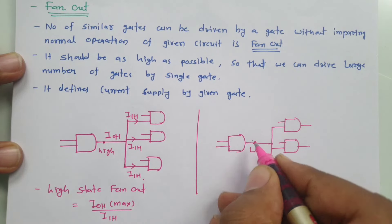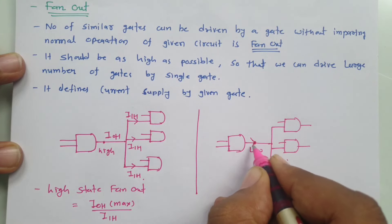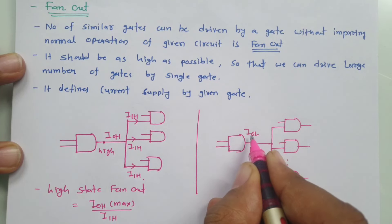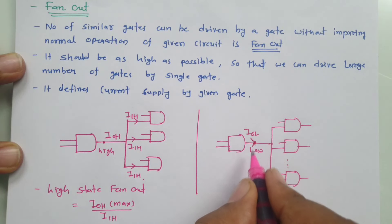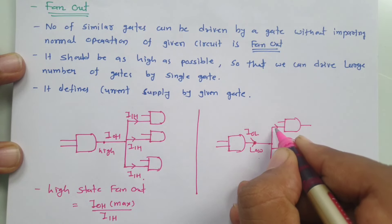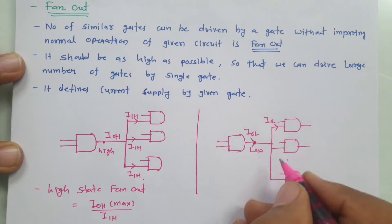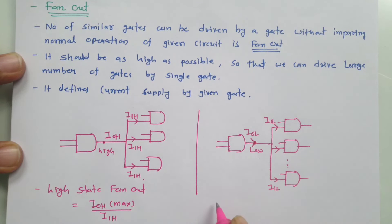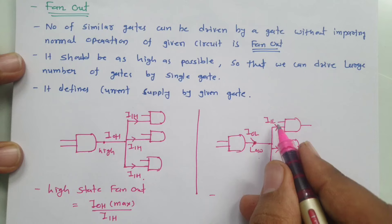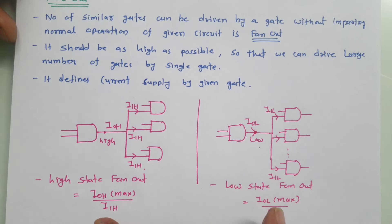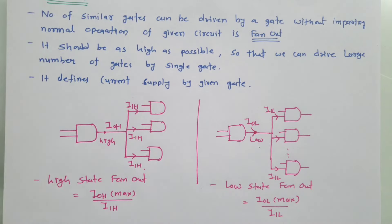Let us say this is logic low and this current that is IOL, IOL means logic low output current. And here I am saying it is IIL, means this is input low current to this AND gate. Then low output state fan-out, that is IOL max divided by IIL. So these are the basics that one should know when we talk about fan-out.